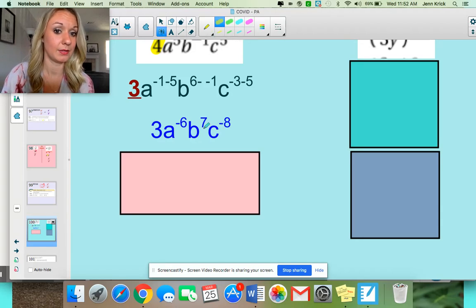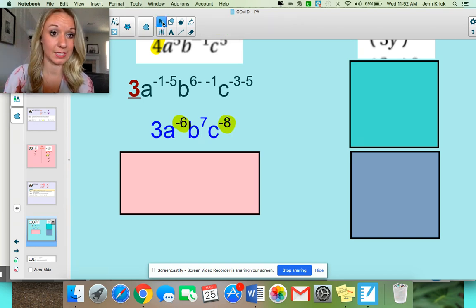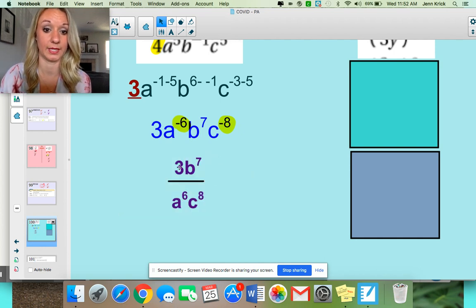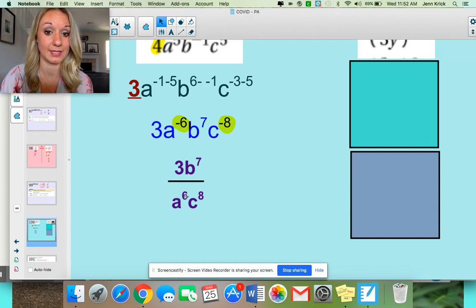Then you need to say, am I done? And hopefully you're going to say no, because you've got a negative exponent, negative exponent. To make those positive, send them to your denominator. Your final expression will look like this: 3b to the seventh. Those just stay on top. You just squish them together with multiplication. And then a to the sixth, c to the eighth. You're also good in this regard because your variables are in alphabetical order.